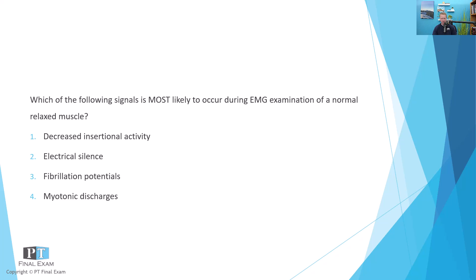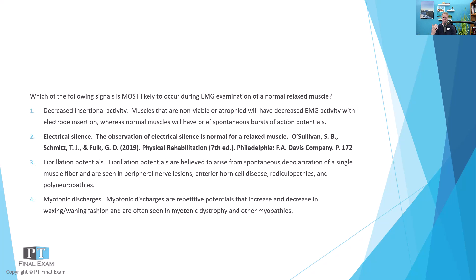One of the reasons I wanted to have this type of question is because as of 2024, they are introducing more questions related to EMG examination techniques, meaning you have to be able to interpret EMG from an entry-level perspective — to have an idea of what normal is and what abnormal looks like. This question asks about examination of a normal relaxed muscle. The correct answer is option two, electrical silence. Electrical silence is normal for a relaxed muscle, meaning there's not a lot of activity.